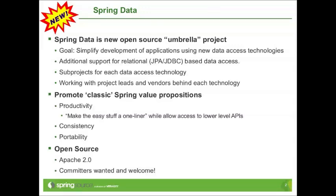I like to think of this as making the easy stuff a one-liner. So if the main use case you're doing over and over again in the API is six lines of boilerplate code, we'll really streamline that for you and make it just a simple one-liner. However, the abstractions are never there to lock you in, and you always have access to the low-level APIs should you want to get at them.